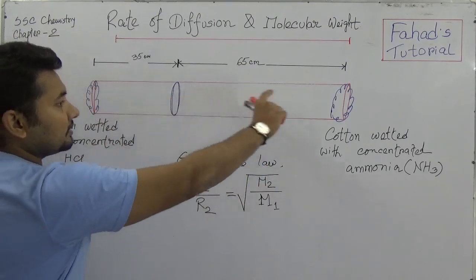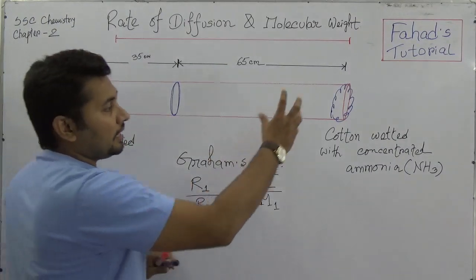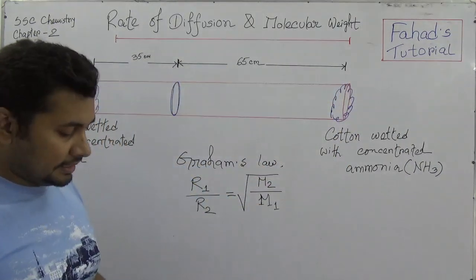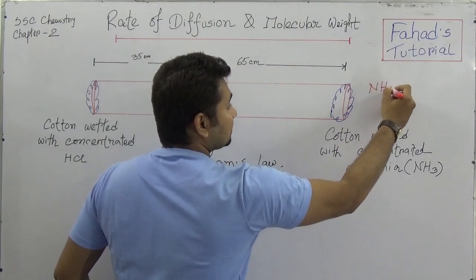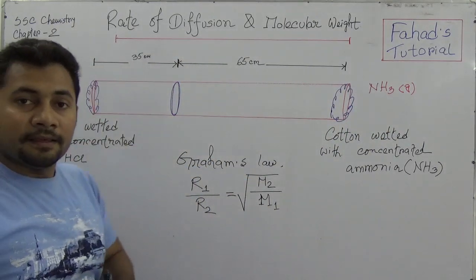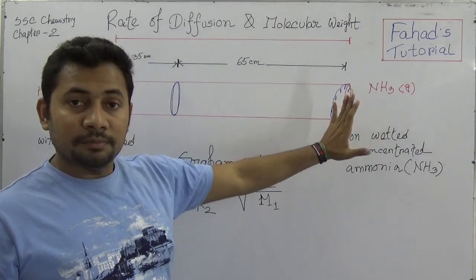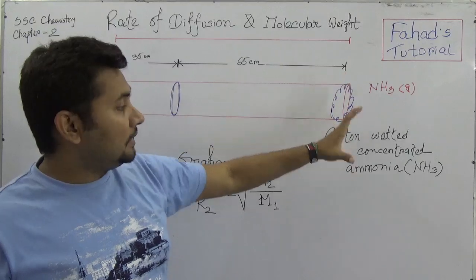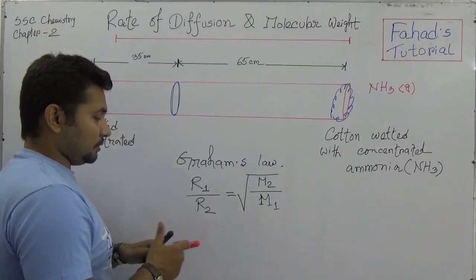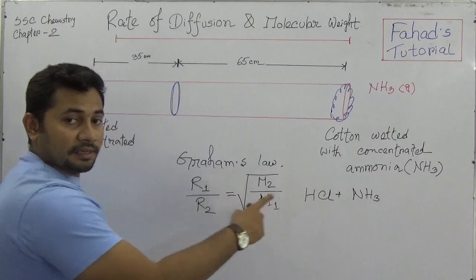What this picture explains: suppose there is a one-meter-long glass tube with two openings. On one end, a cotton plug is soaked with concentrated ammonia gas (NH3), and on the other end is concentrated HCl gas. What will happen after placing these at opposite ends?